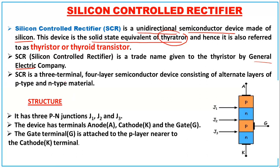An SCR is a three-terminal device with terminals A (anode), G (gate), and K (cathode). It has four layers — a four-layer semiconductor device consisting of alternate layers of P-type and N-type material: P-N-P-N. It has three P-N junctions: J1, J2, and J3. The gate terminal is attached to the P layer nearer to the cathode.